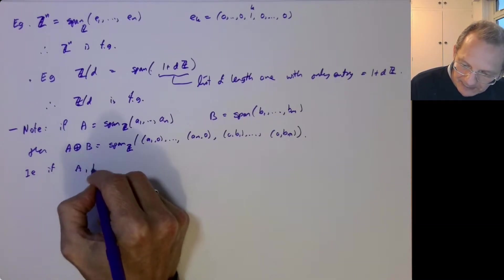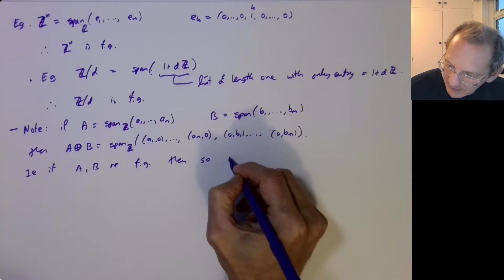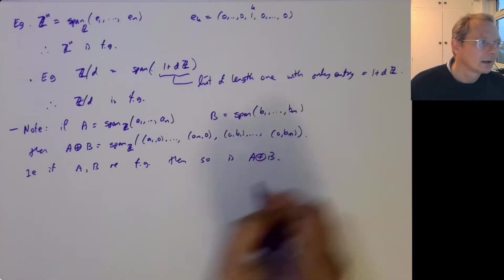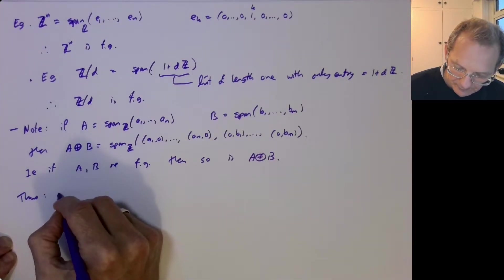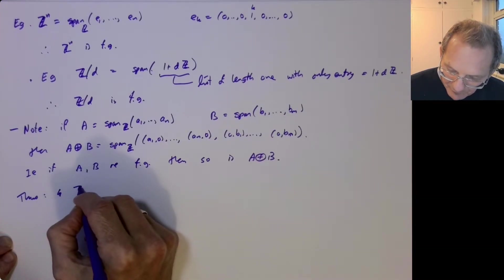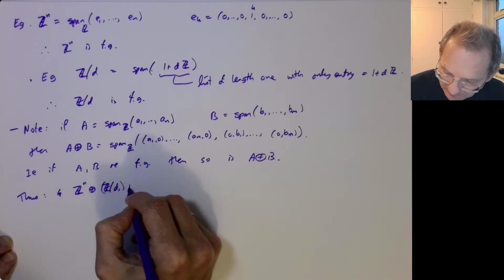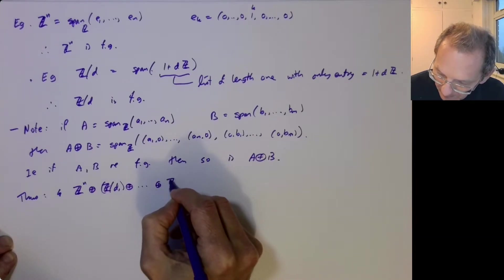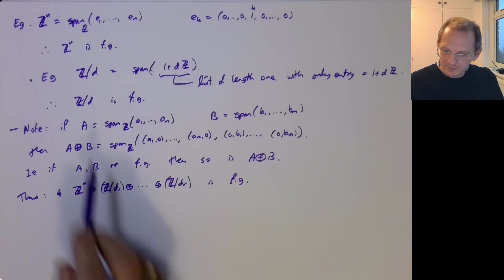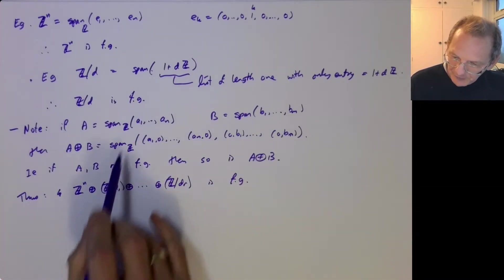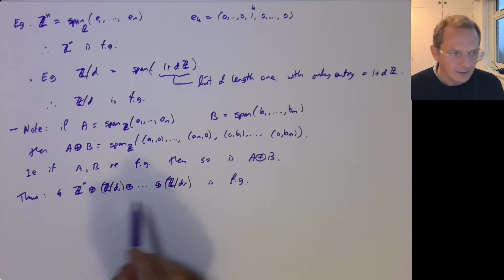So if A and B are finitely generated, then so is A plus B. So if we do something like Z to the N and then plus Z mod D1 plus Z mod DR, anything like that is going to be finitely generated. We said that Z to the N is finitely generated, each of these individual terms is finitely generated. So you've got a finite generating list for a sum like that.